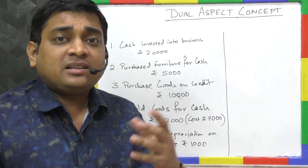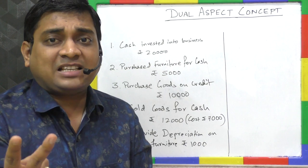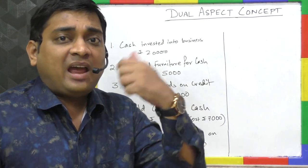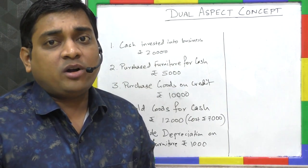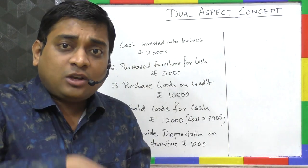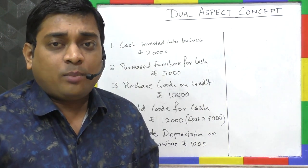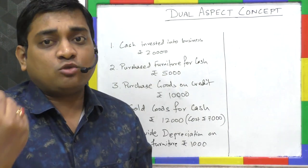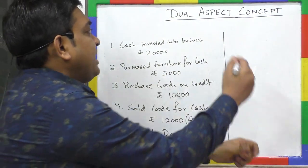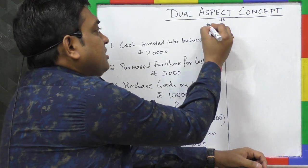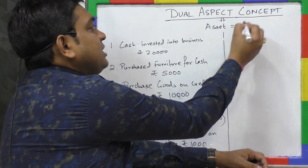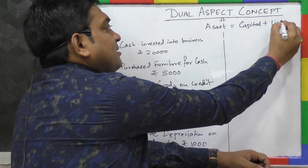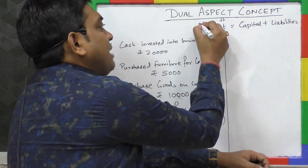So the dual aspect concept says that every transaction has two aspects — one receiving and one giving. For every debit there is a corresponding credit, and for every resource there has to be a source. The dual aspect concept gives us the accounting equation: Assets = Capital + Liabilities.